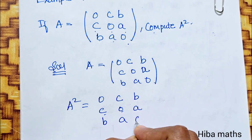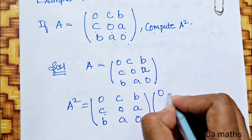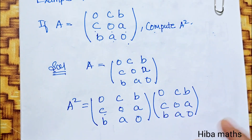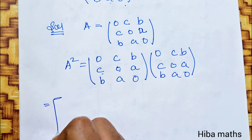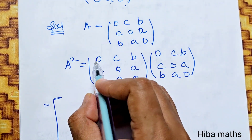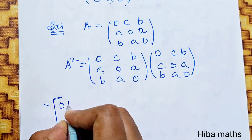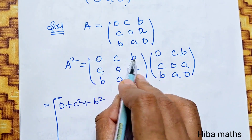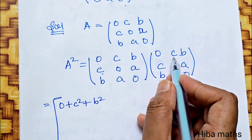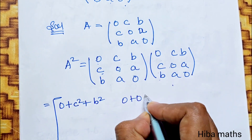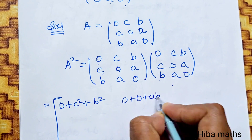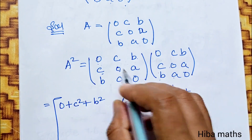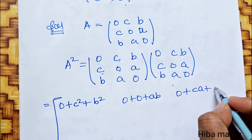Example 7.8. 1st row, 1st column: 0 into 0 is 0, C into C is C squared, B into B is B squared. 1st row, 2nd column: 0 into C is 0, C into 0 is 0, B into A is AB. 1st row, last column: 0 into B is 0, C into A is CA, B into 0 is 0.